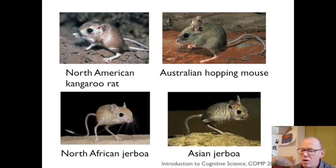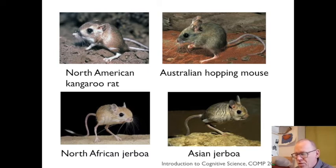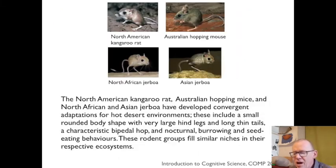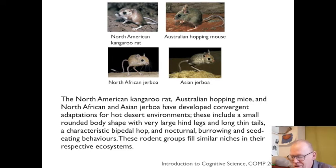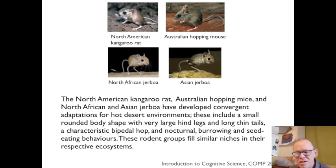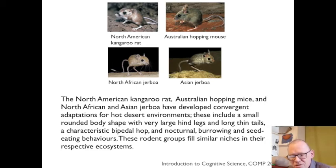Here, for example, are four pretty much unrelated species of small animals found in deserts: the North American kangaroo rat, the Australian hopping mouse, the North African jerboa, and the Asian jerboa. They look like minor variations on a theme, but they all developed independently of each other. What they have in common is the environment in which they live. Their thin rounded body shape, large hind legs, thin tails, their hop, their nocturnal habits, their particular burrowing and seed-eating behaviours — all of these speak of a specific fit between these animals and the desert environment in which they live, and they're sensible adaptations in a desert environment.